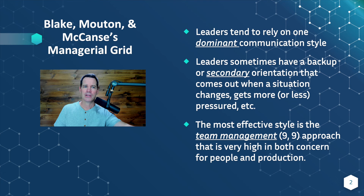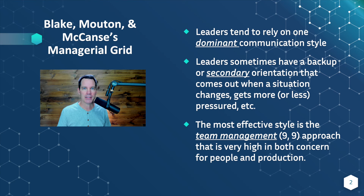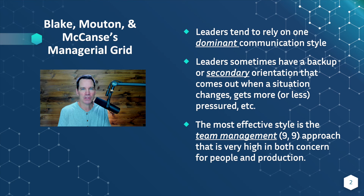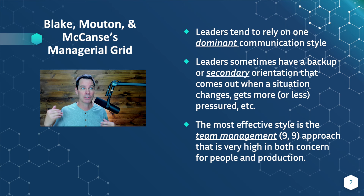Some additional details about this model: leaders, according to the research, tend to rely on one cell called a dominant communication style. So if you look at the grid, you might think that's the way you usually are, but it also depends upon what's going on. Leaders sometimes have a backup or secondary orientation that comes out when a situation changes — let's say it gets more pressured or possibly less pressured. You might shift to something like a country club or middle of the road style, but then when a crisis happens — something out of the blue — you might get demanding and focus on results to get out of that crisis. That might be your secondary style.